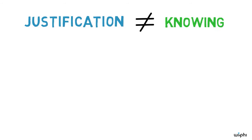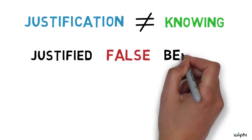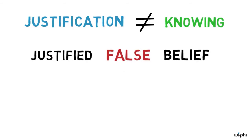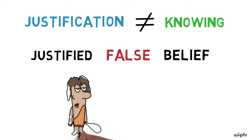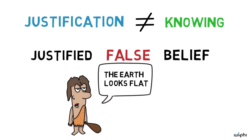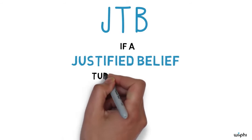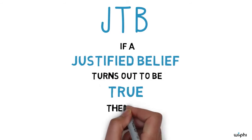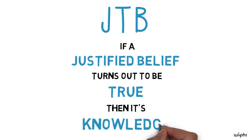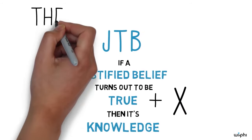Gettier suggests one possible difference. He observes that you could in some sense be justified in believing something that turns out to be false, for example, if you had lots of misleading evidence that made it look like the right thing to believe. If your justified belief turns out to be true, then the JTB theorist has to say that you have knowledge. You might wonder whether that's right, or more generally, what needs to be added to true belief to get knowledge. That's the Gettier problem.